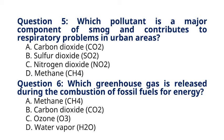Question 6. Which greenhouse gas is released during the combustion of fossil fuels for energy? A. Methane, CH4. B. Carbon dioxide, CO2. C. Ozone, O3. D. Water vapour, H2O. The correct answer to question 6 is option B. Carbon dioxide, CO2. Explanation: burning fossil fuels like coal, oil, and natural gas releases carbon dioxide, CO2, into the atmosphere, contributing to the greenhouse effect and global warming.